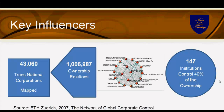Let's look at key influences. A wonderful study was done in 2007 by the ETH — the University of Zurich, Department of Physics. They looked at the base interaction of the 43,060 biggest companies in the world measured on OECD measures. They found more than a million relationships of ownership, but when they scaled down to the core details, there were 147 institutions that controlled more than 40% of the ownership. If so few companies control so much, their action will predict and drive a move when they buy or sell.